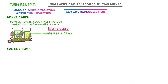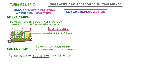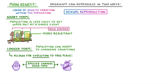In the longer term, it means that the population can adapt to changing conditions, because it allows for evolution to take place. And remember, evolution is just a process by which species change over time, because the most favourable traits are most likely to be passed on each generation.